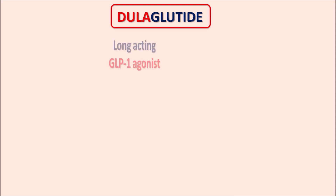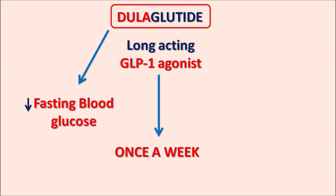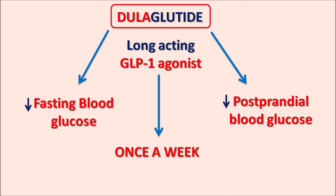This drug is an incretin mimetic, so it acts like incretin. One of the advantages of this drug is that it is a long-acting GLP-1 agonist, so there is no need to give it every day — this drug is administered once weekly. Because of its long duration of action, it can control glucose levels for the entire week, reducing both fasting blood glucose levels as well as postprandial blood glucose levels.